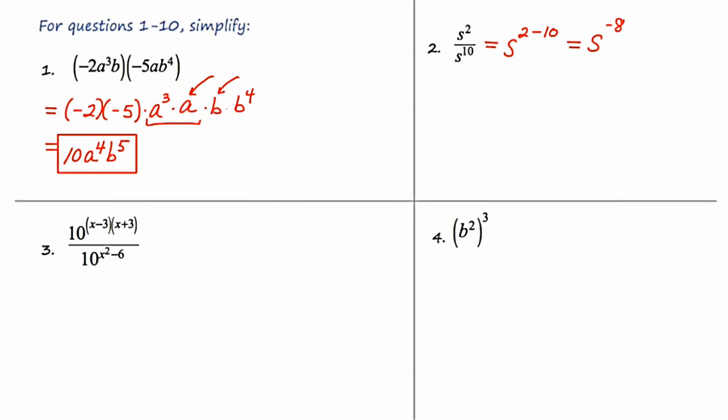But in an algebra class, you're really not supposed to leave an answer with a negative exponent. So I'm going to bring that s to the negative 8 down to the denominator, making it 1 over s to the eighth. And this would be considered a simplified answer. More simplified than the one before it because we don't want to leave an answer with a negative exponent.